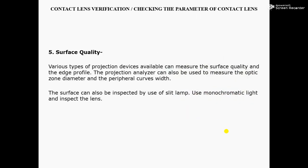Number 5, Surface Quality. Various types of projection devices available can measure the surface quality and the edge profile. The projection analyzer can also be used to measure the optic zone diameter and the peripheral curve width. The surface can also be inspected by use of slit lamp — use monochromatic light and inspect the contact lens. Monochromatic light means it is an optical radiation where the optical spectrum contains only a single optical frequency.